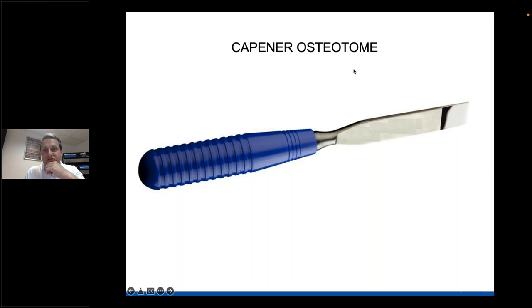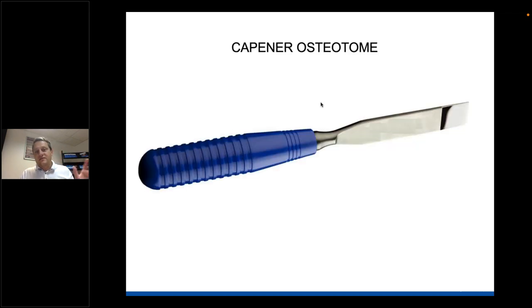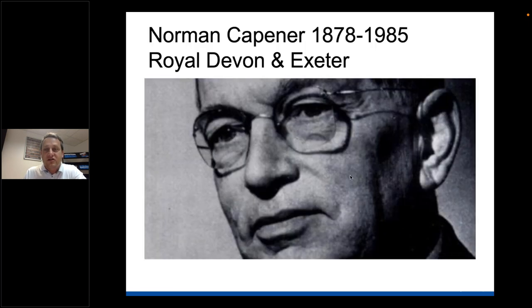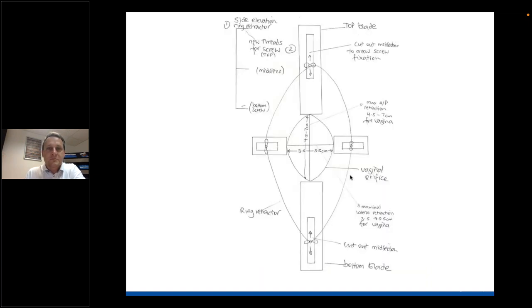It all becomes relatively common sense in relation to how the instruments are named - osteo meaning bone, with other terms relating to creating an opening or cutting into. In general, the typical surgical instrument maker has deferred entirely to the whims of the surgeon, and since all instruments are generally named after the surgeon who used or designed them, that makes sense. Here is Norman Capner, a very famous surgeon from Royal Devon in Exeter, hugely famous in orthopedics, particularly for hips.